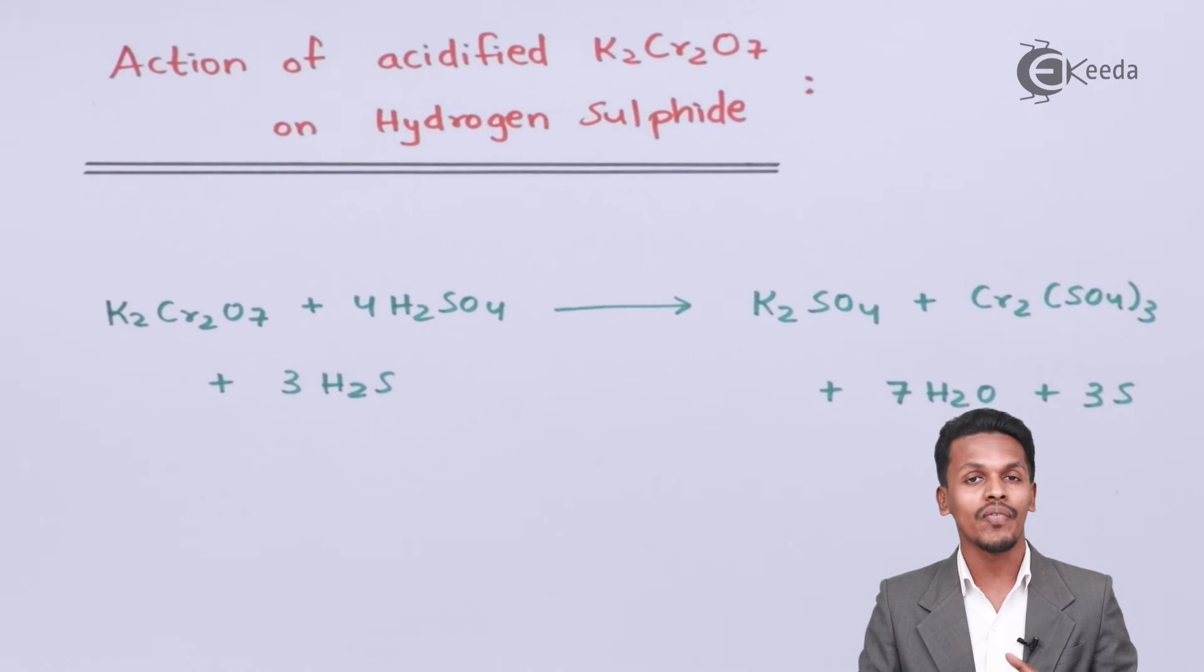Therefore, this was the action of acidified K2Cr2O7 on hydrogen sulfide. Thank you friends for watching this video. I hope you have understood this reaction clearly. Don't forget to subscribe to our channel. Thank you so much.